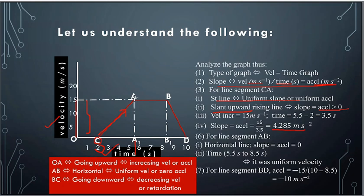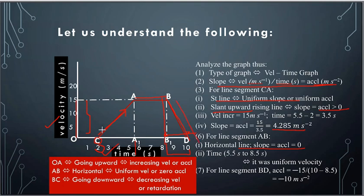For line segment AB, it is a horizontal line — zero slope. Here slope means acceleration, so zero acceleration means uniform velocity. For segment BD, from 8.5 seconds to 10 seconds, that is a duration of 1.5 seconds, and the line is going downward, so the acceleration is negative. The vertical intercept is 15, and horizontal is 10 minus 8.5 equals 1.5. So acceleration equals minus 15 divided by 1.5, which equals minus 10 meters per second squared — negative acceleration or retardation.